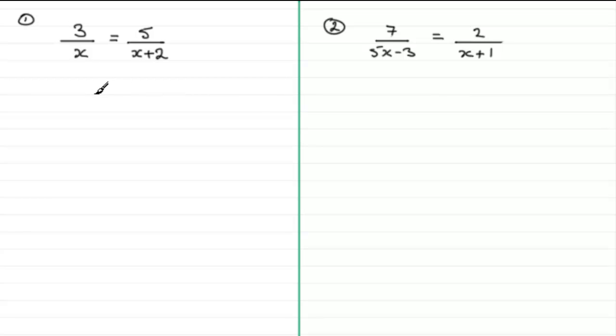So, what we need to do is get rid of the fractions. And the way that we can get rid of the x and the x plus 2 is to multiply both sides by x and x plus 2.